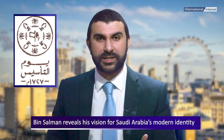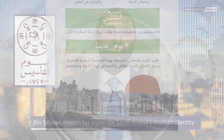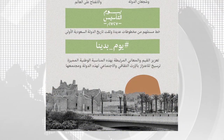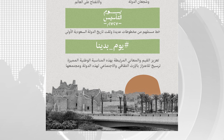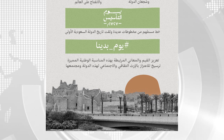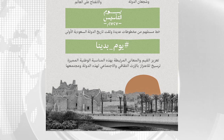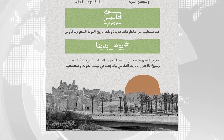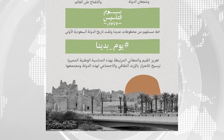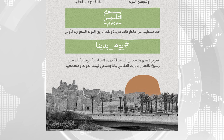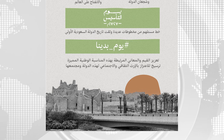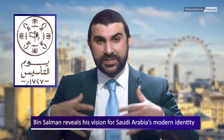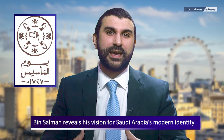The third point worth noting is that the image of al-Dir'iyah, the original capital of the Kingdom used in the government infographic explaining the emblem, does not contain any mosque or minaret — even though al-Dir'iyah at this time would of course have had many mosques and minarets. In other words, Muhammad bin Salman does not even find room for Islamic representation in representing al-Dir'iyah itself.